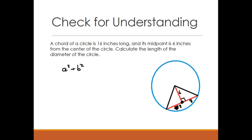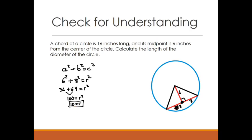Using the Pythagorean theorem, a² + b² = c², we get 6² + 8² = r². That gives us 36 + 64 = 100 = r², so the radius is 10 inches. The diameter is twice the radius, which is 20 inches. This was a tough problem involving several theorems. The key takeaways: draw your picture, and be creative about where you draw your radii.